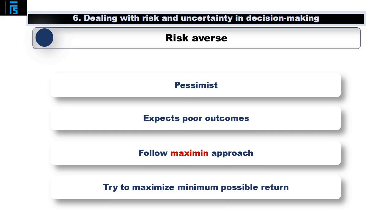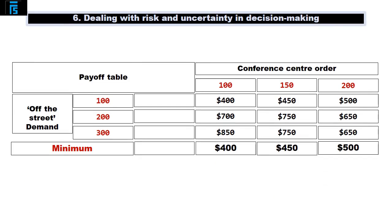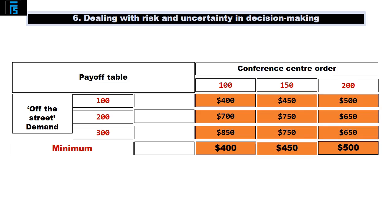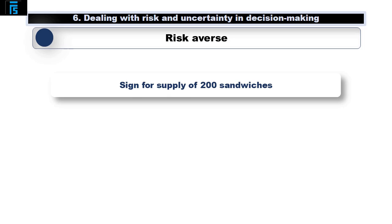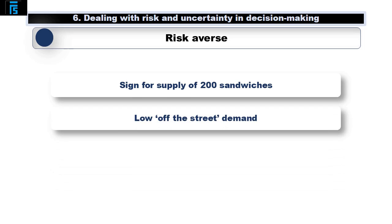We can use the payoff table in a different way to help us with a Maximin decision. Look at the first column. If we sign up to supply 100 sandwiches to the conference centre, the worst possible outcome is when off-the-street demand is 100. If we repeat this exercise for the second and third columns, the bottom row shows the worst case scenario associated with each decision. The best of these occurs if Jack signs up for 200 sandwiches with the conference centre. So if Jack is risk averse, he will choose to supply 200 sandwiches a day, because if the worst happens — off-the-street demand turns out to be low — his outcome will be the best it can be in those bad circumstances.